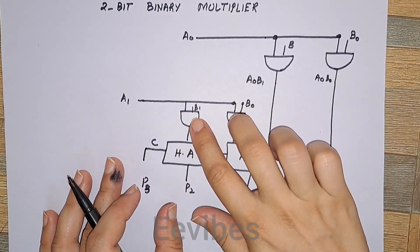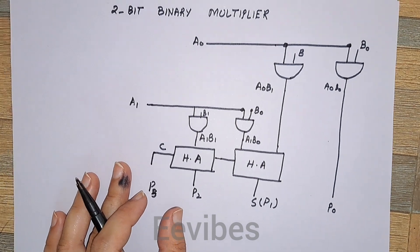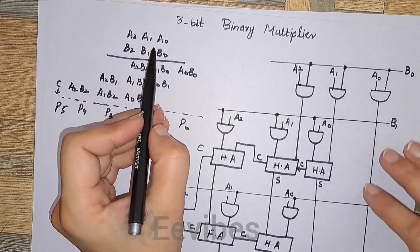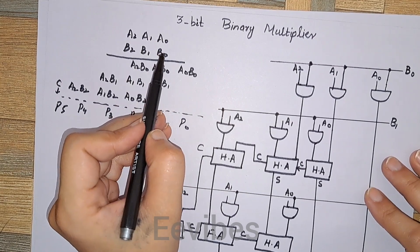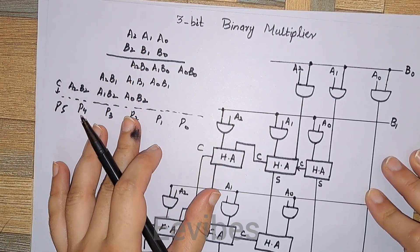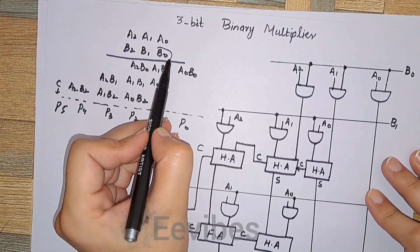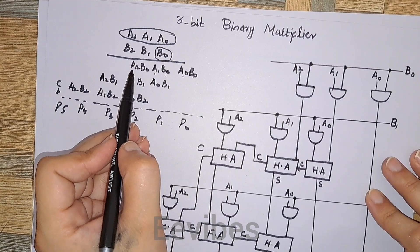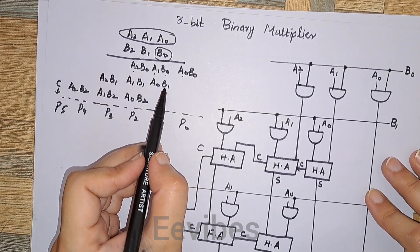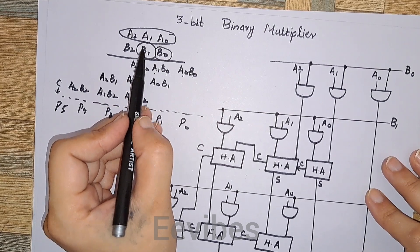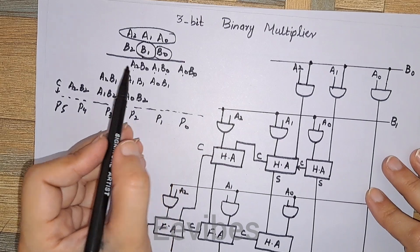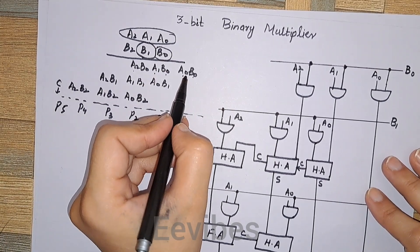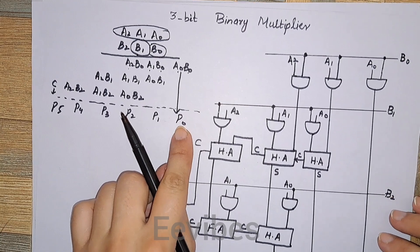Now let's take an example of a three-bit binary multiplier, where we multiply two three-bit numbers. Suppose a0, a1, a2 and b0, b1, b2 are the bits of the corresponding numbers. We take each bit of the multiplier and multiply with each bit of the multiplicand, giving a0·b0, a1·b0, a2·b0 for the first row. The LSB term a0·b0 always comes as it is, contributing to the first term of the product.